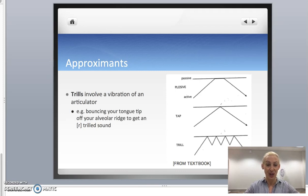What happens for this approximant, and you can see it here on the diagram, is that the tip of the tongue is rapidly touching and untouching the passive articulator, that is the alveolar ridge. It's very quickly bouncing off the alveolar ridge.